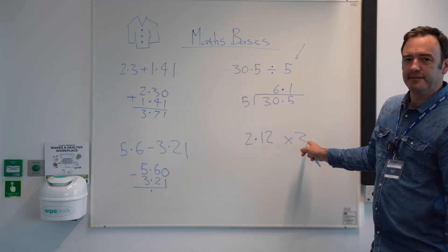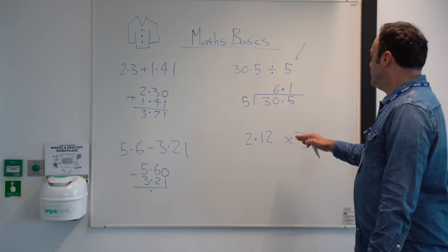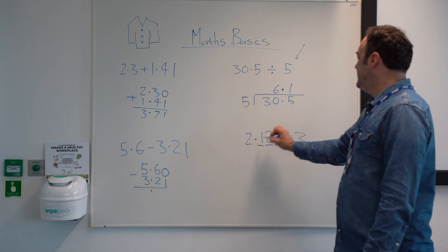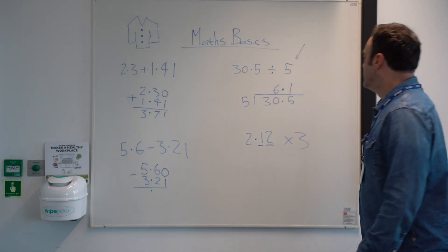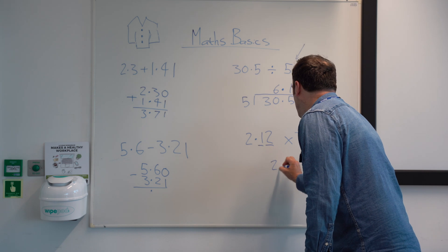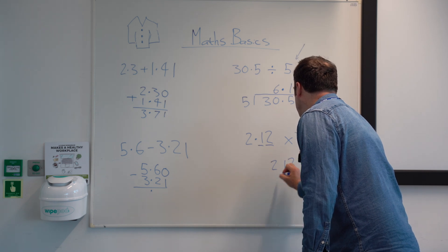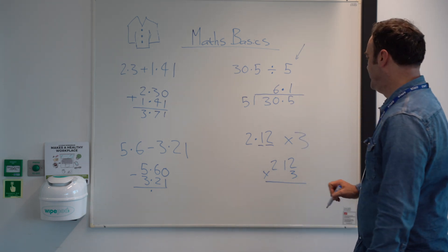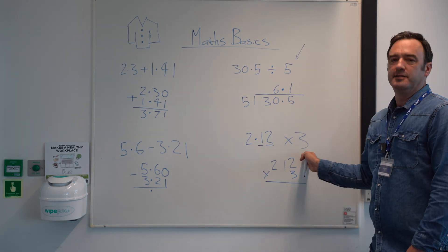This is where we deviate from this a bit. For this one I say copy out the question. Underline any decimal places, any number to the right of a dot. Then copy it out without the decimal. So it doesn't confuse children. So they don't do shirt buttons here.